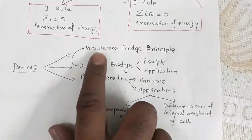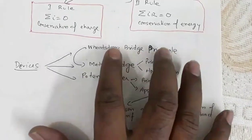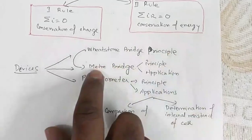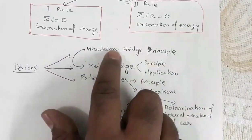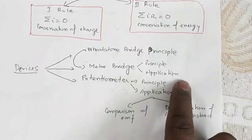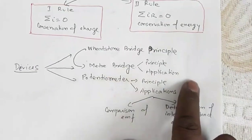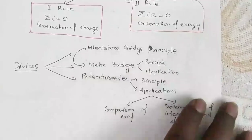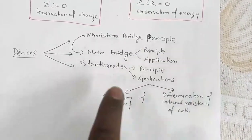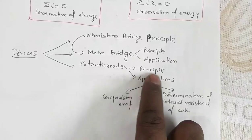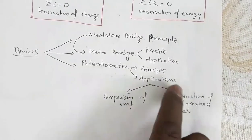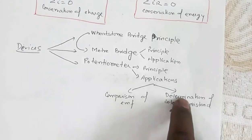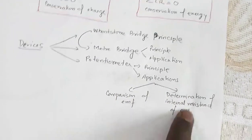The later part covers three devices: Wheatstone bridge, meter bridge, and potentiometer. You must go through the Wheatstone bridge principle and be able to derive it by applying Kirchhoff's rules. The meter bridge works on the principle of the Wheatstone bridge. For the potentiometer, you need to know its working principle and two applications: comparison of EMF of cells and determination of internal resistance of a cell.